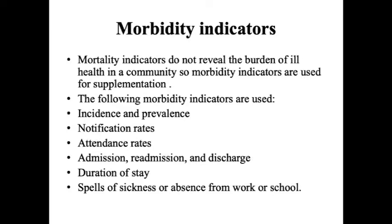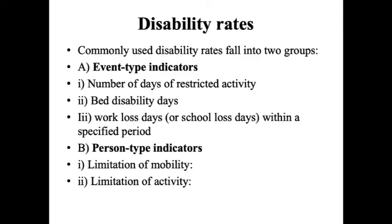Disability rates are another set of indicators, usually divided into two groups. Event-type indicators include number of days of restricted activity, bed disability days, and work loss days within a specific period. Person-type indicators include limitation of mobility and limitation of activity. Together these give us the disability rates.